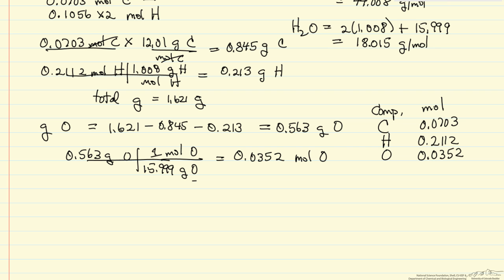So if I want to get the minimum integer ratios, I divide each of these numbers by 0.0352. This would be 1, this is pretty close to 2, and this number 6. So then our empirical formula would be C2H6O.